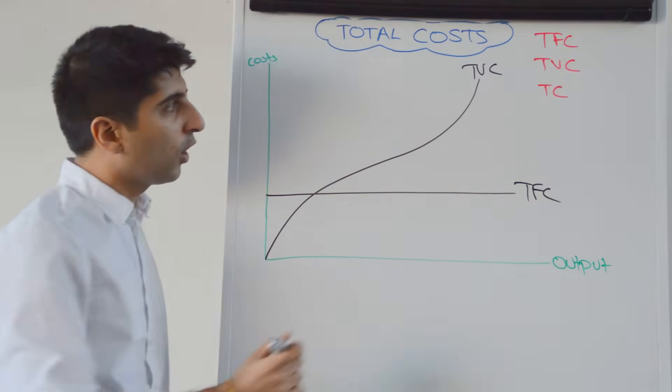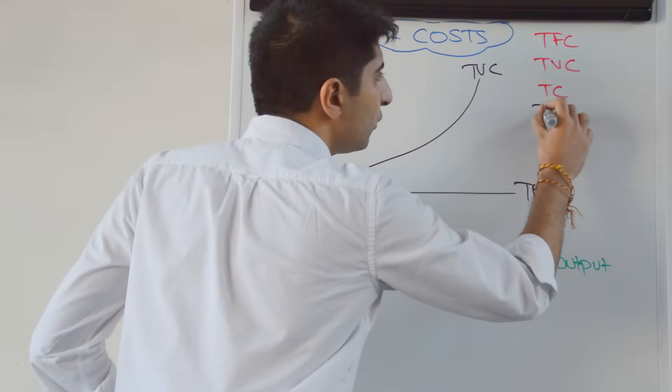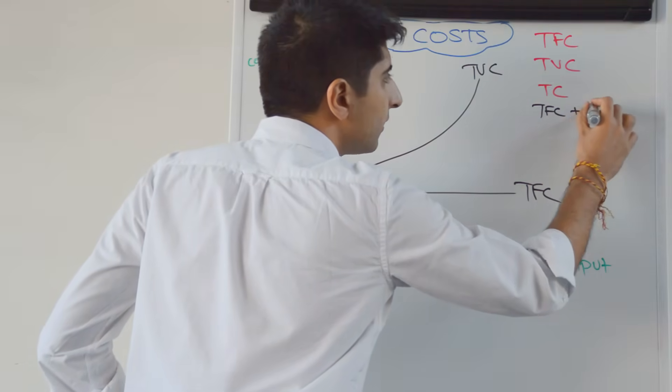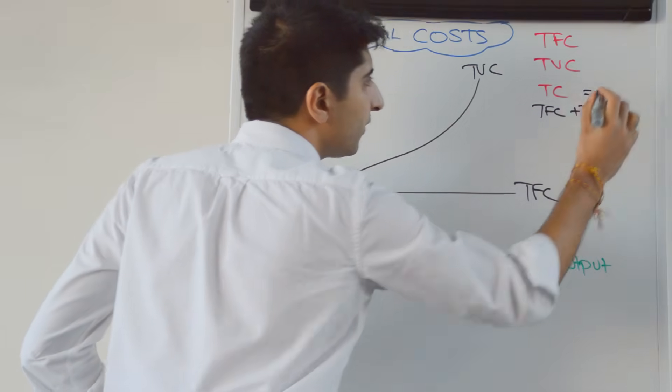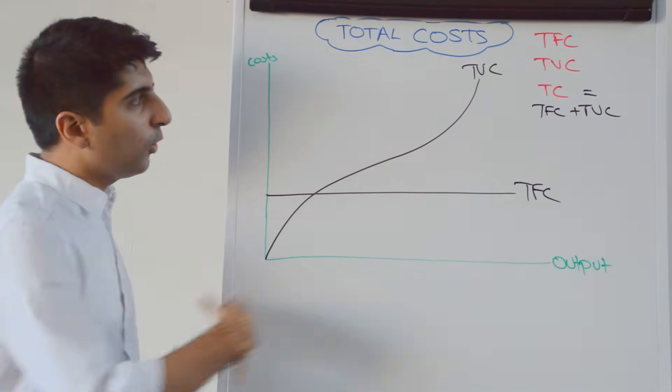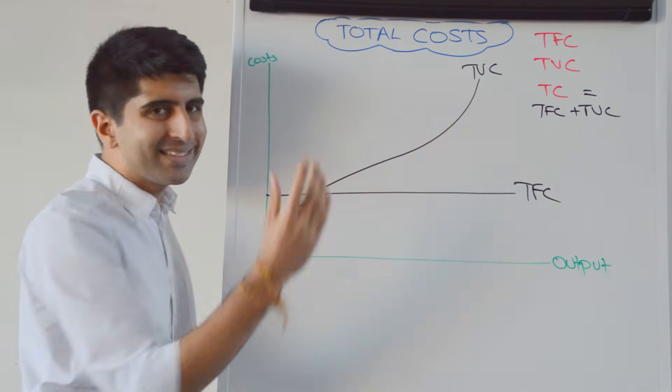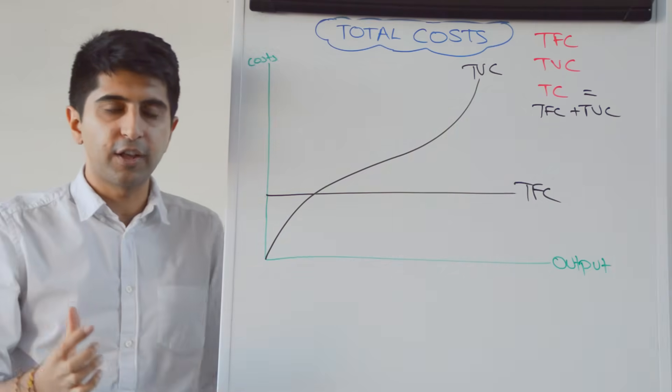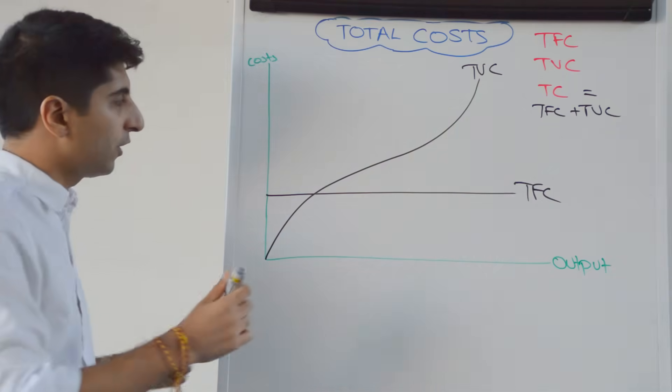Now, the total cost curve. Well, remember, total cost is just total fixed cost plus total variable cost. That's the equation for total cost. If total fixed cost is constant, then the total cost curve is going to look exactly like the total variable cost curve, but just a bit higher. So, it's going to look like this.